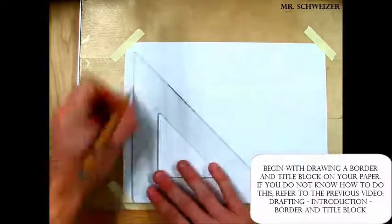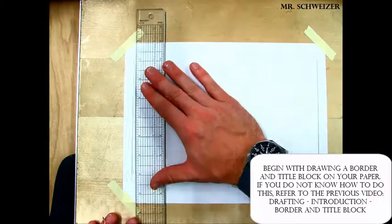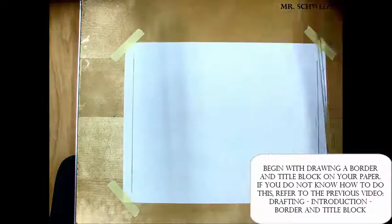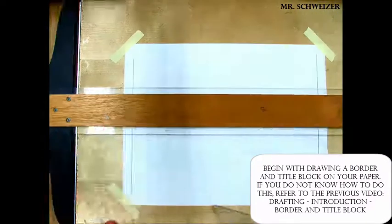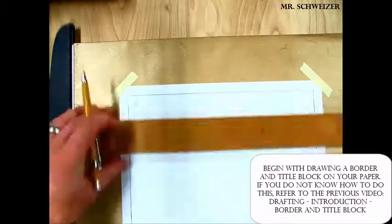For every drawing that we complete, we need to make sure that we have a border and title block drawn out on our paper. If you do not recall how to make a border and title block, there is a previous video describing how to do so.